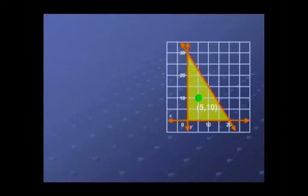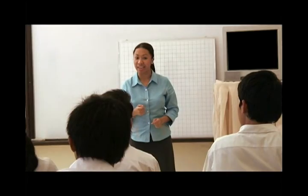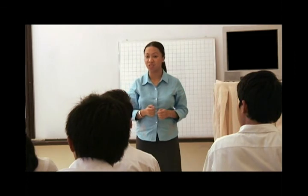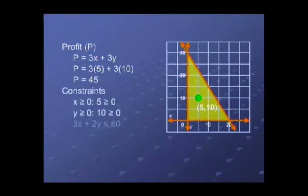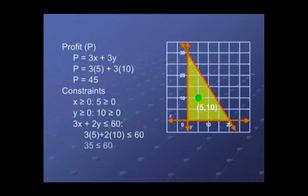Now consider a point inside the region, how about the point 5, 10. So what's your profit this time and will it satisfy the constraints? If we buy 5 Sampaloc and 10 Santol, we will earn 45 pesos. At the same time, it only costs 35 pesos to buy them from the manufacturer, so we're still within the budget.